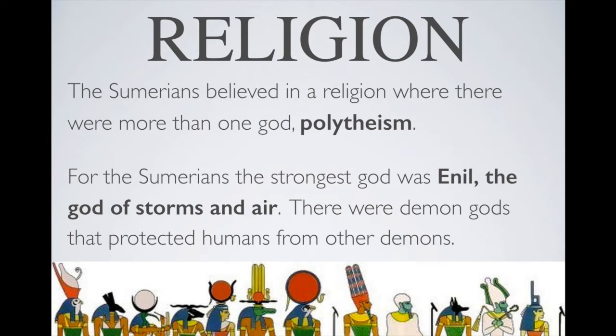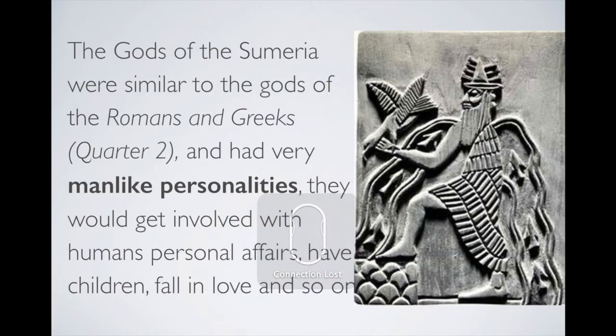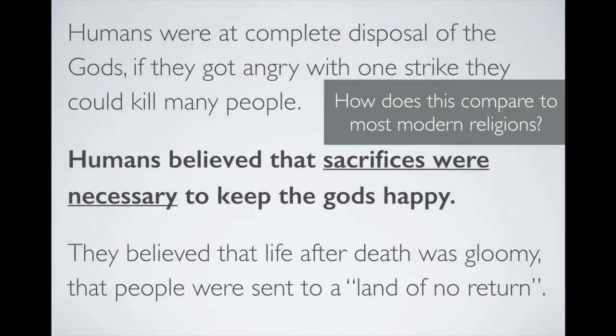Religion in Sumer was polytheistic — polytheism means there are multiple gods, as opposed to monotheism. The strongest god was Enlil, the god of storm and air. The gods of Sumer are very similar to those of the Romans and Greeks in that they had very human-like personalities — they constantly got involved in personal affairs with people.